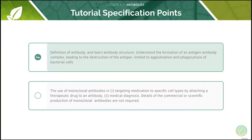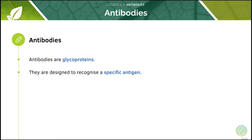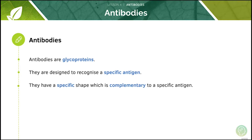We'll start by looking at the definition of antibody and its structure. Like all proteins, the structure of an antibody determines its function and specificity. Antibodies are glycoproteins. They are designed to recognize a specific antigen and they have a specific shape which is complementary to that specific antigen.